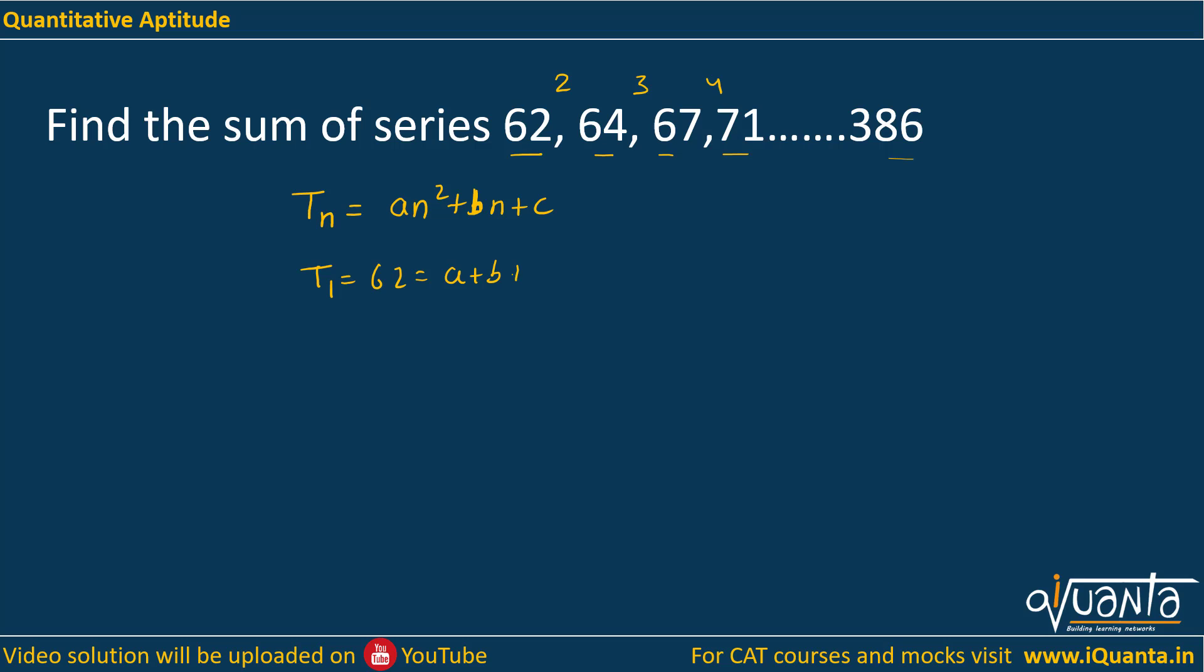This will be equal to A plus B plus C, because N is equal to 1. Then if I take T2, that means 64, I will be getting 4A plus 2B plus C. T3, that means I will be taking 67, this will be equal to 9A plus 3B plus C.